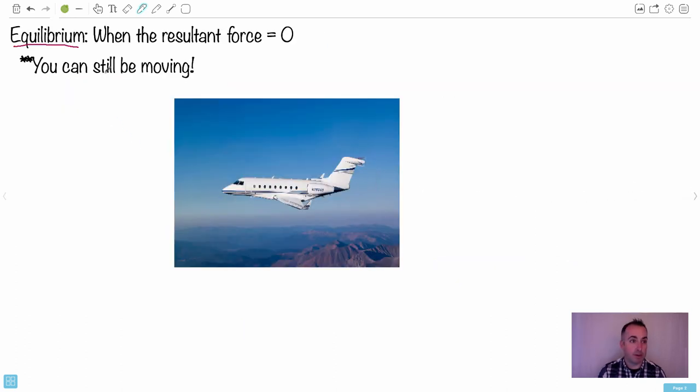Let's go maybe quickly through equilibrium. So equilibrium is what happens when the resultant force is zero. If the resultant force is zero, you are in equilibrium. You can still be moving. An example of that, like I said, with a car. We could also do the same idea with a plane, for example.